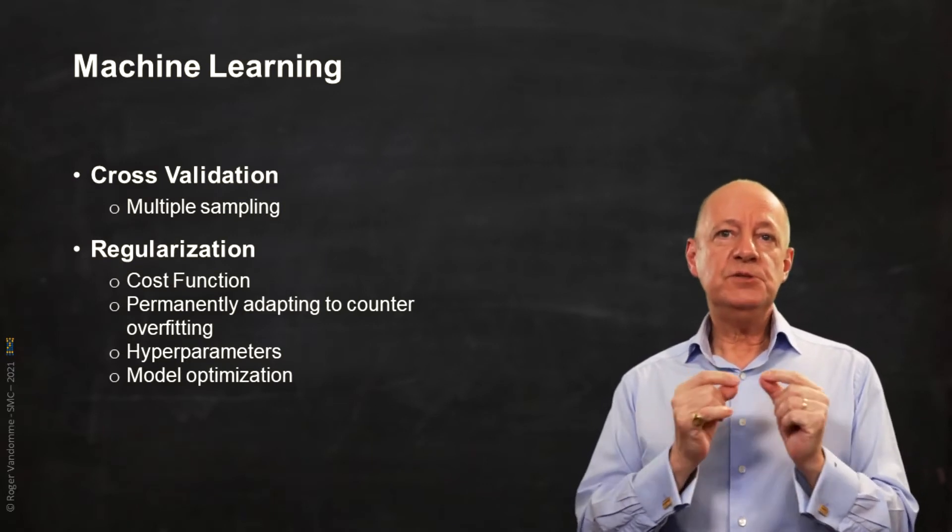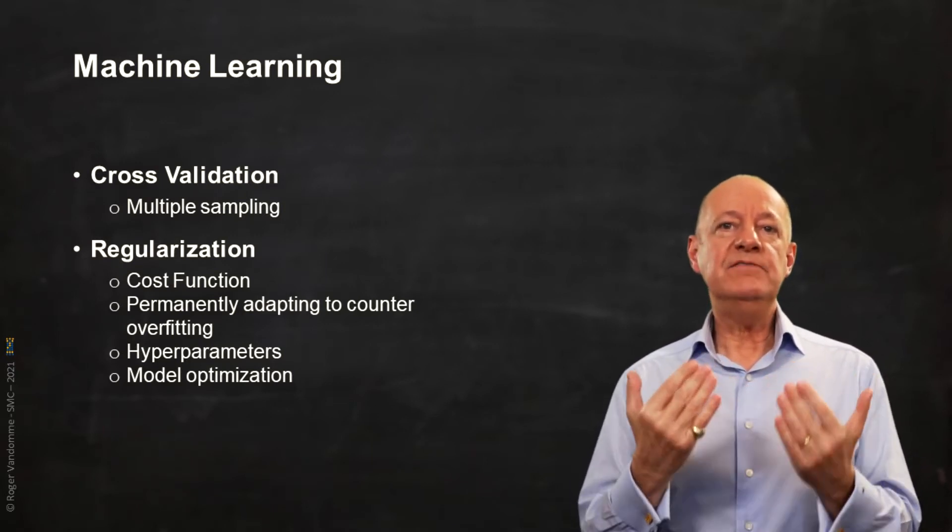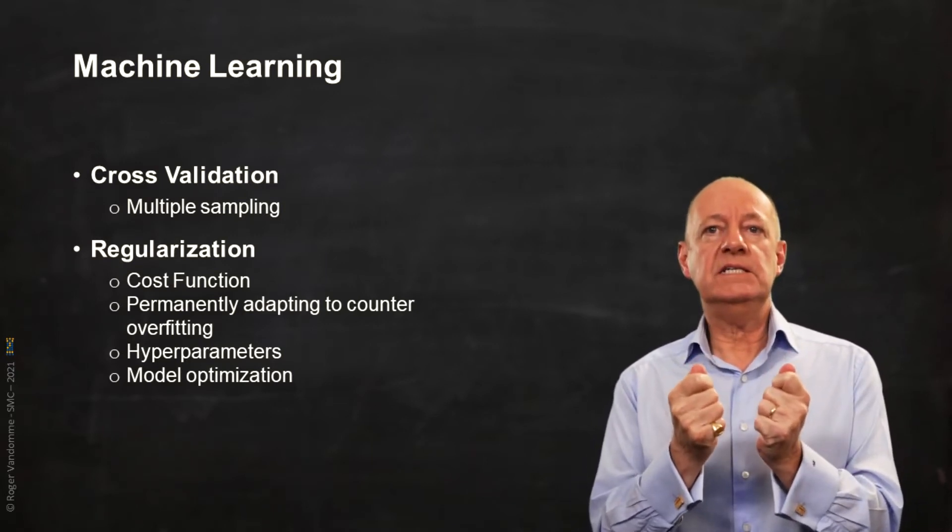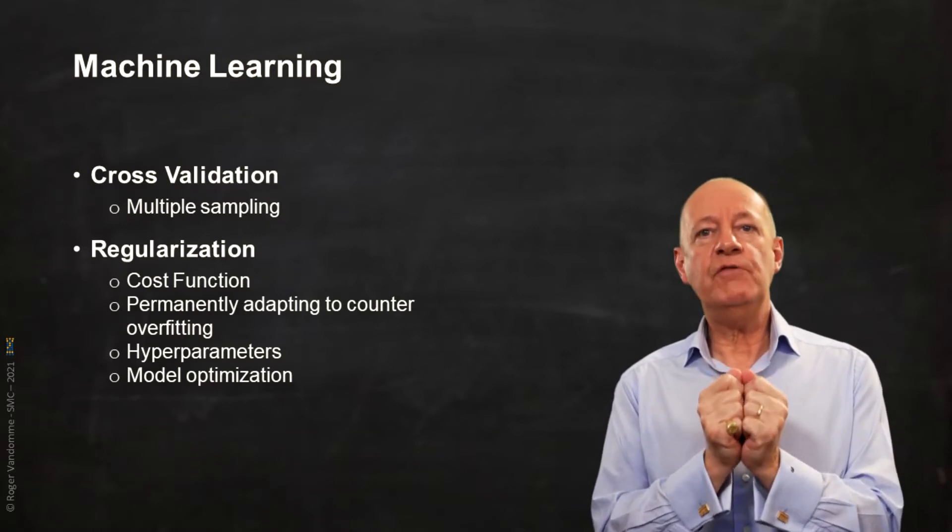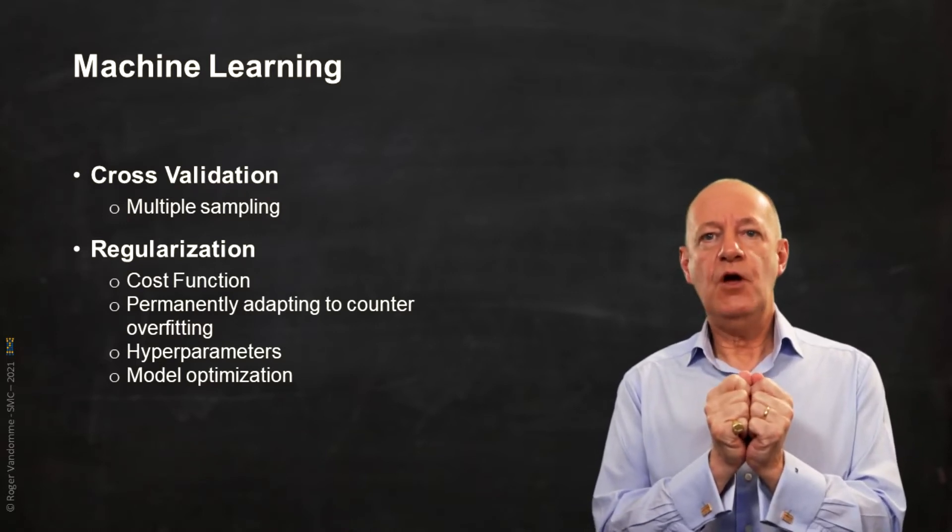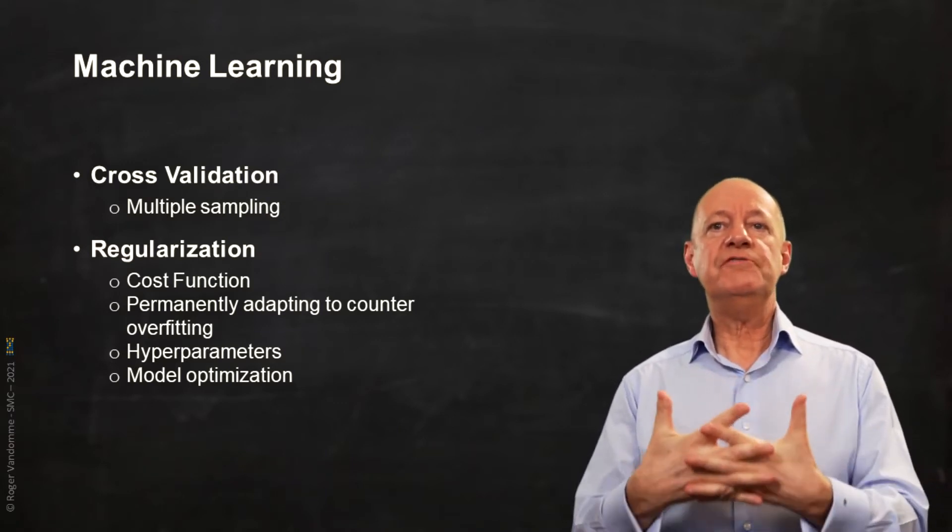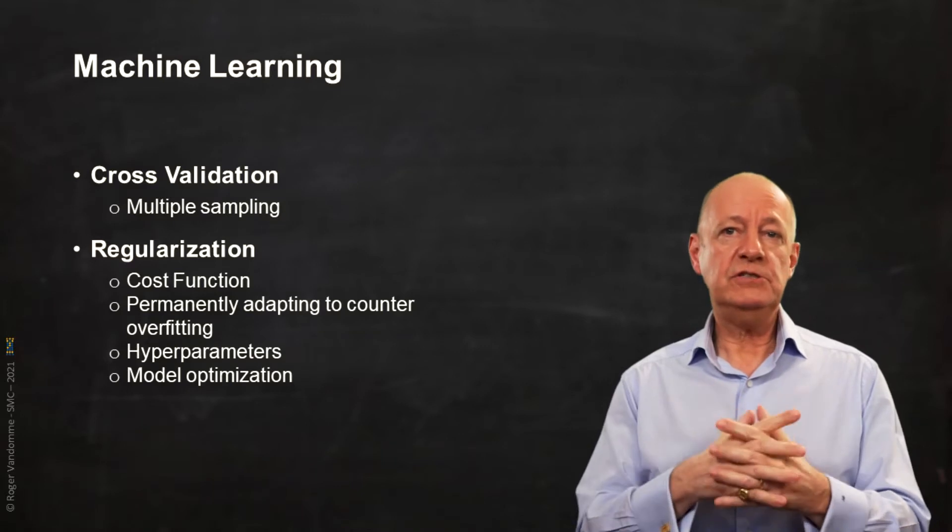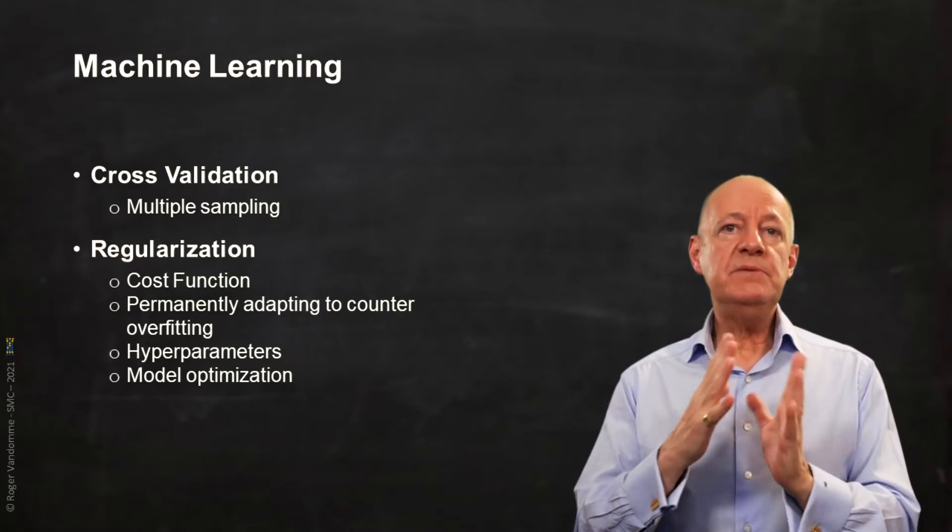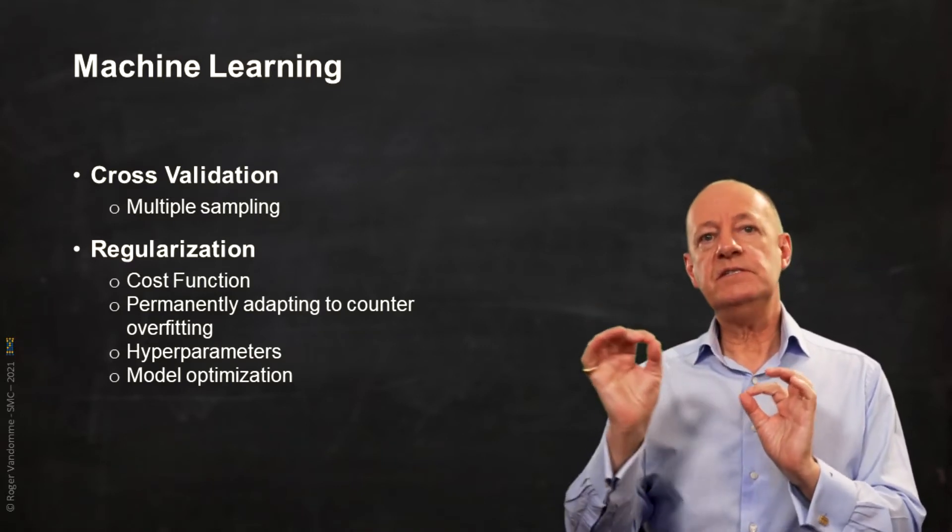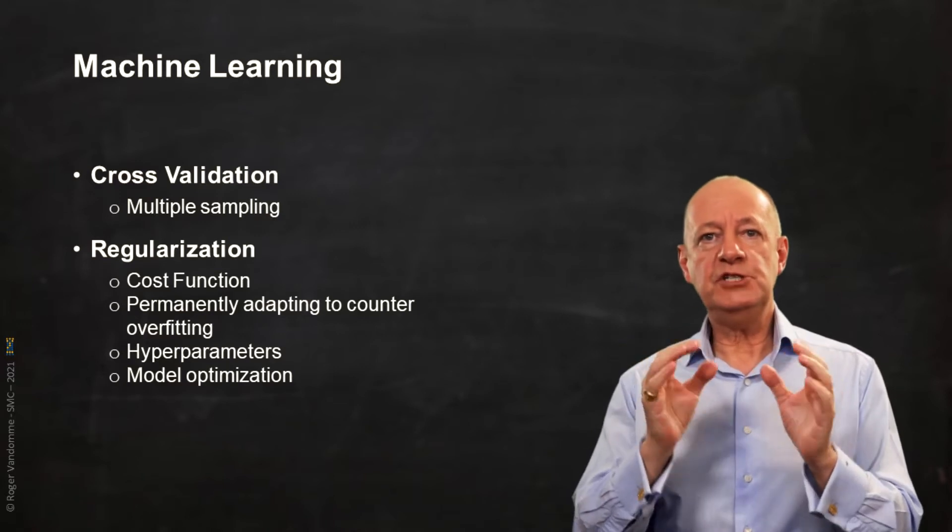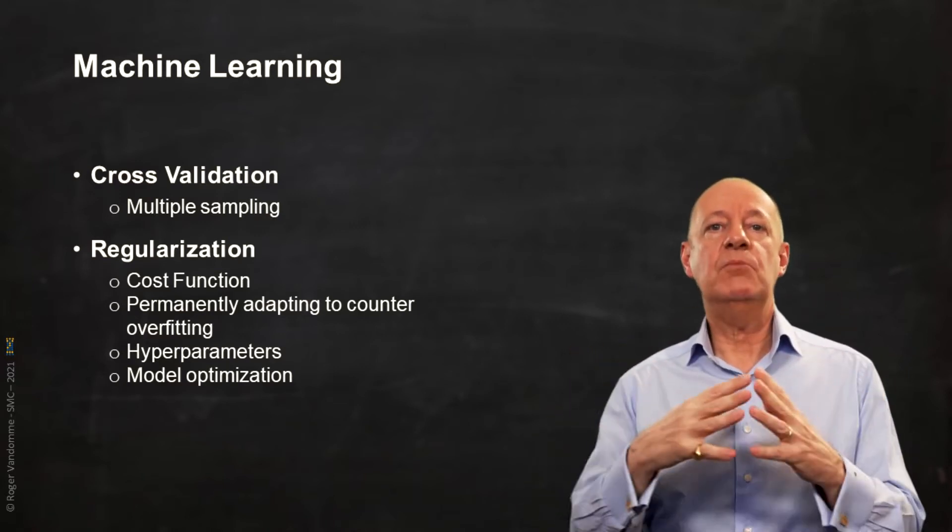Regularization is more complex. It involves penalizing the optimization of the cost function. We learned at the beginning of the previous course that the cost function of a linear regression is minimizing the sum of distances between each observation and the line representing our model.